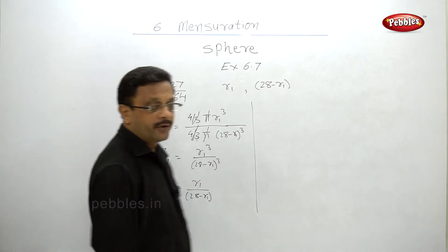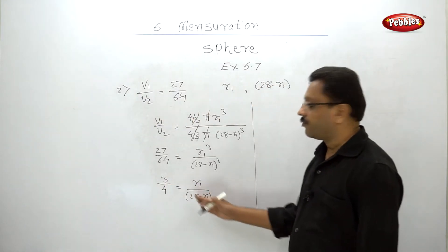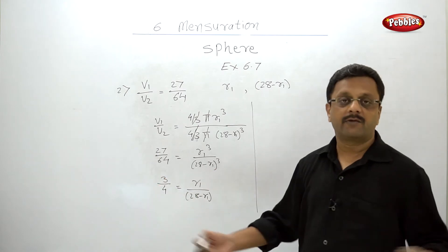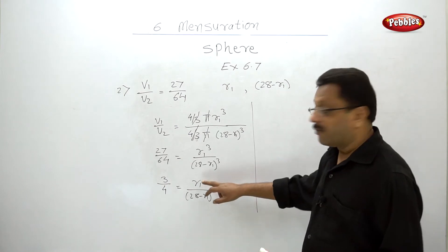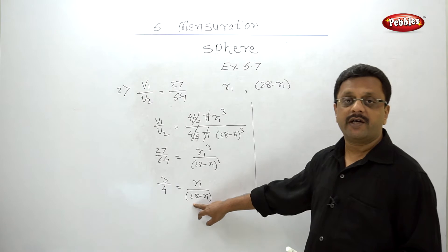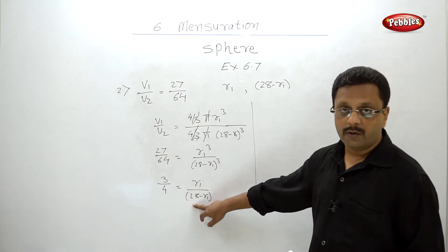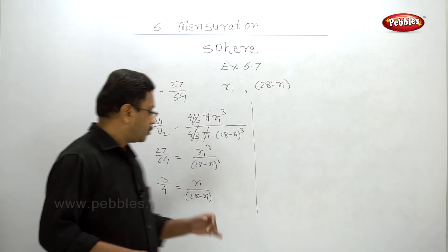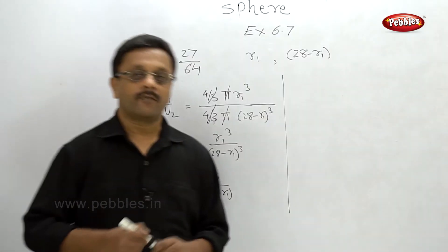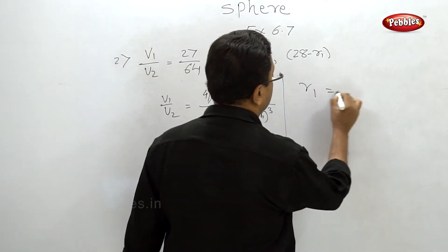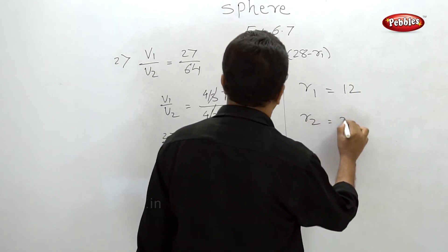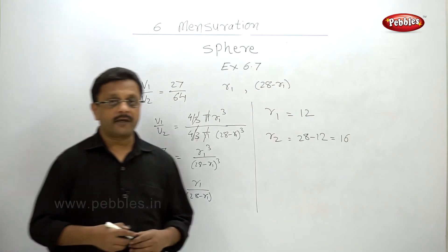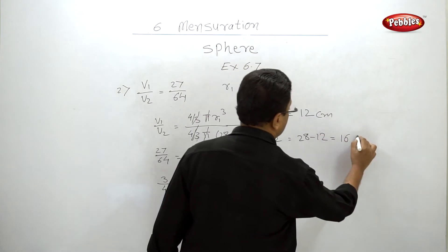Please pause your video here and solve this expression to find r1 — take (28 - r1) to one side and 4 to the other side. Once you get r1, subtract from 28 to get r2. The answer is r1 = 12 cm and r2 = 28 - 12 = 16 cm. Don't forget to write the unit: centimeters.